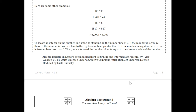A few more examples. The absolute value of negative 23: if you walk 23 units to the left in the negative direction from zero, you'd have to walk 23 units back, so the absolute value of negative 23 is positive 23. The absolute value of 6 is 6, because six is six units away from zero. The absolute value of 817 is 817, because it's 817 units away from zero. And the absolute value of negative 3,000: if you walked 3,000 units to the left of zero in the negative direction, you'd eventually get to negative 3,000, so its absolute value is positive 3,000.